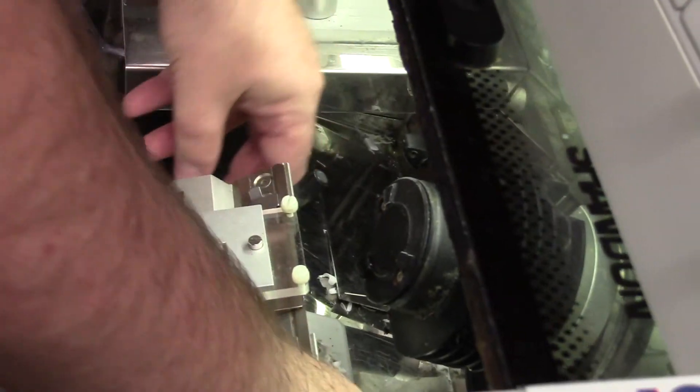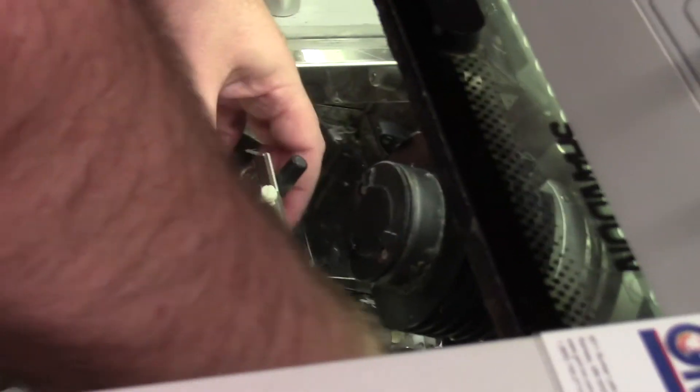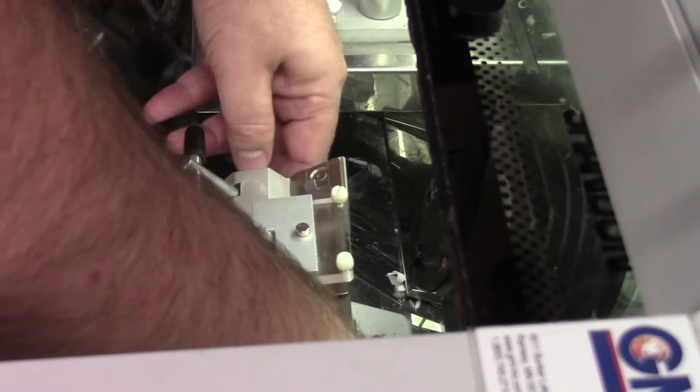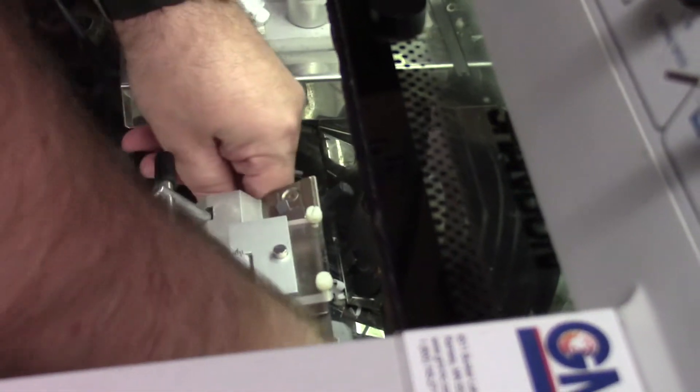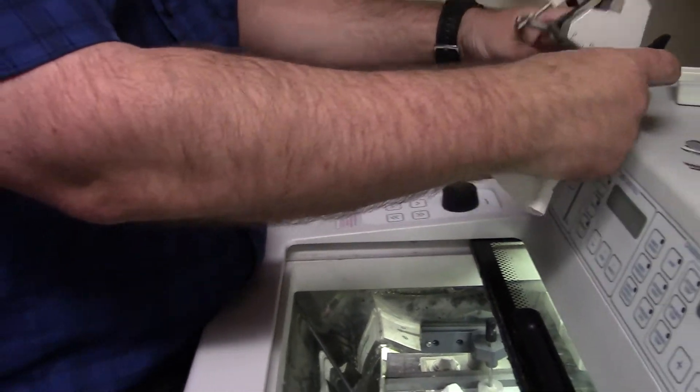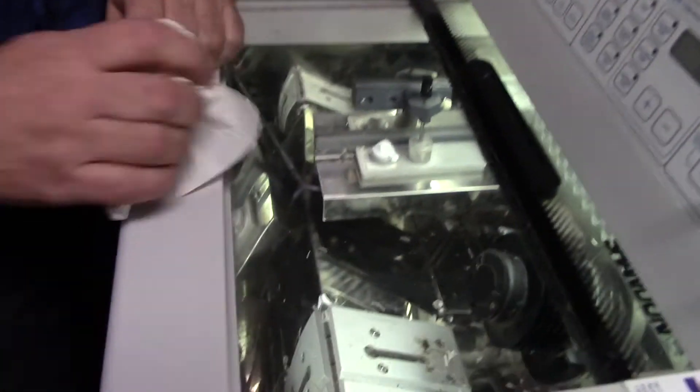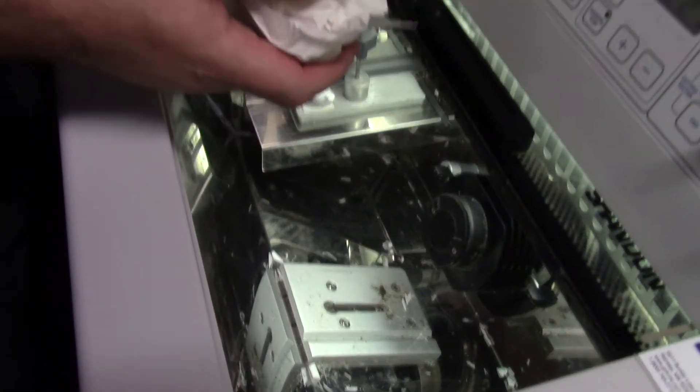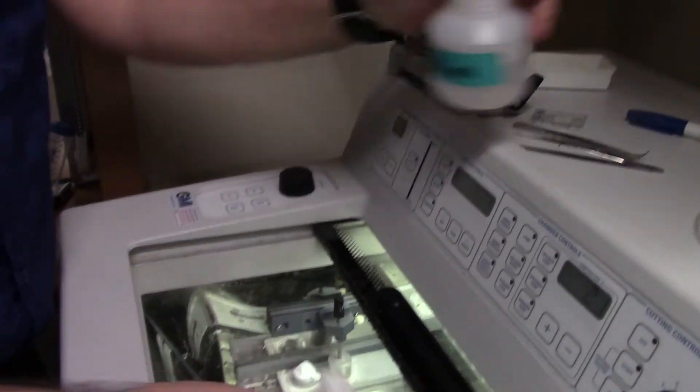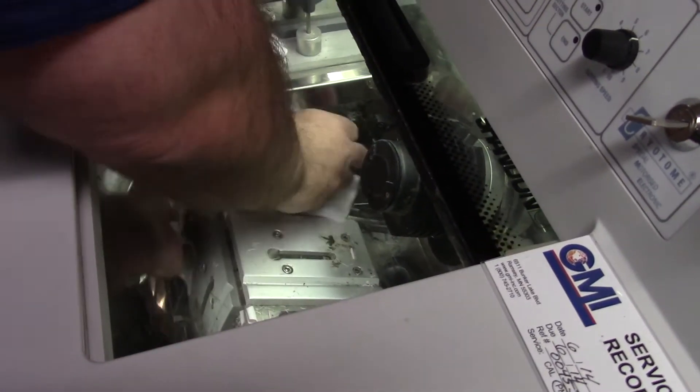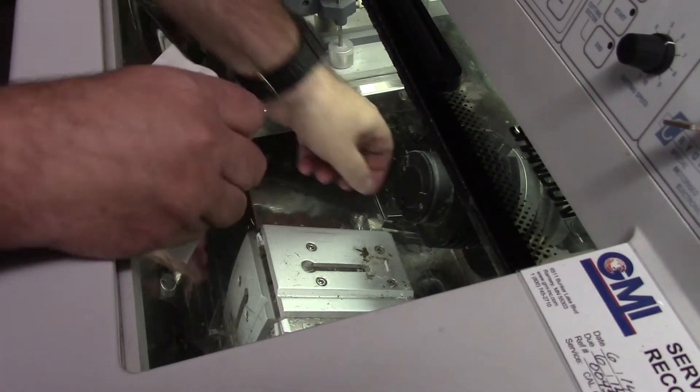I can also loosen this part, which is our blade holder, and expose all the nastiness. So let's do a quick spray here of 70% ethanol and we'll clean up all this extra tissue that has fallen into the back.